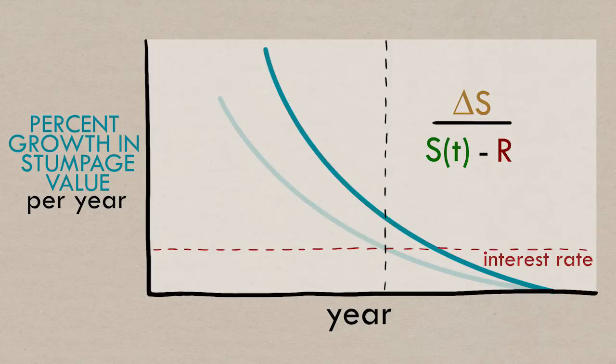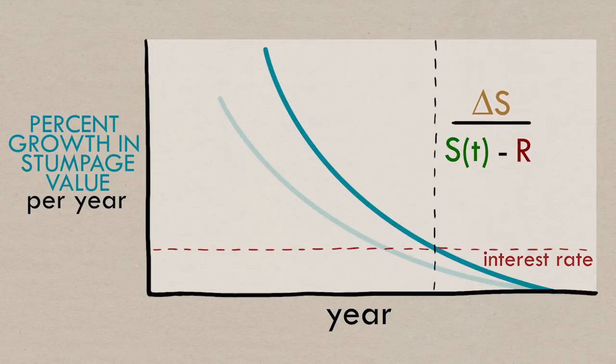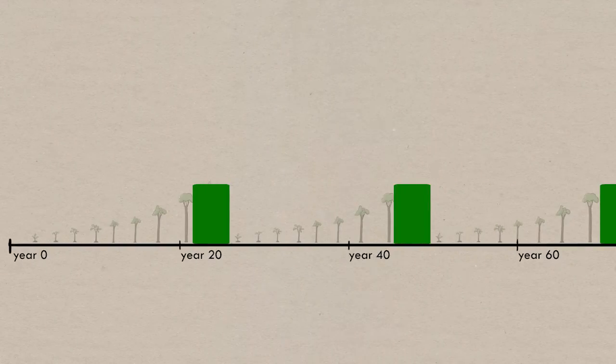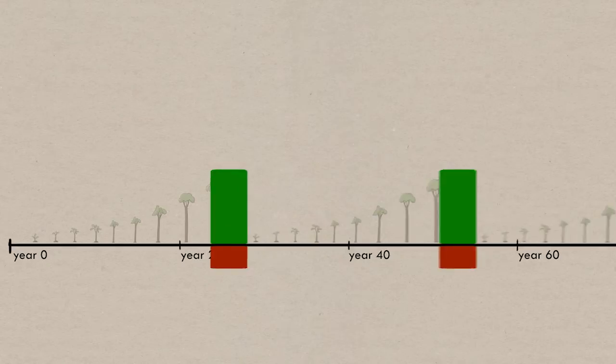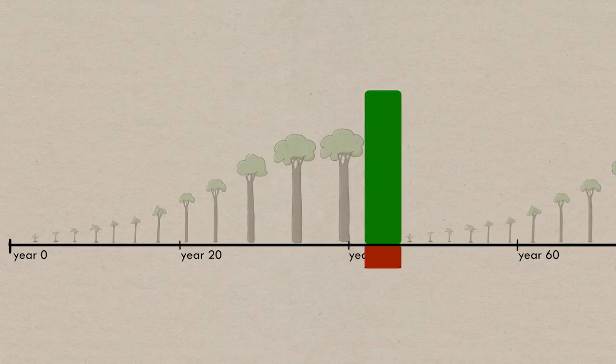The end result is the optimal rotation age becoming later. Intuitively, this is probably easier to understand as, if replanting is expensive, then replant as little as possible. Let the forest grow a bit to try to balance out those replanting costs.